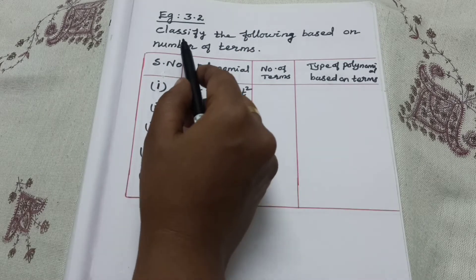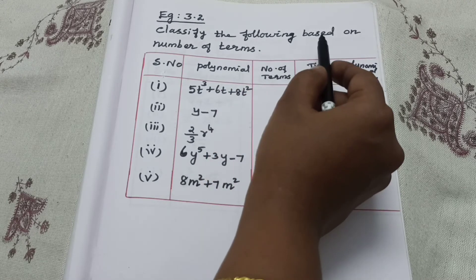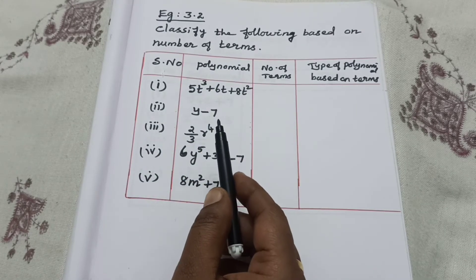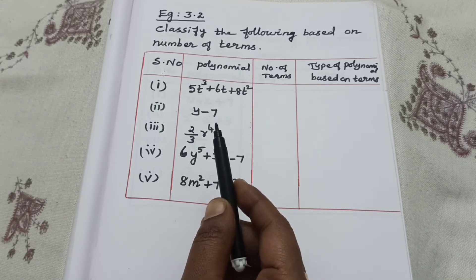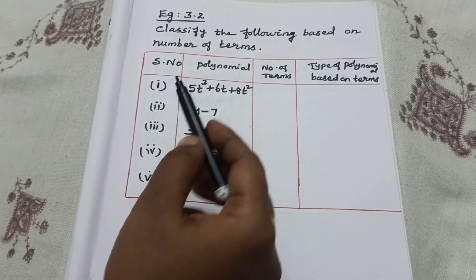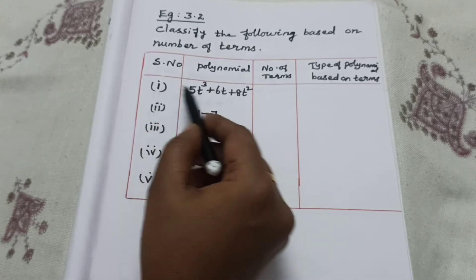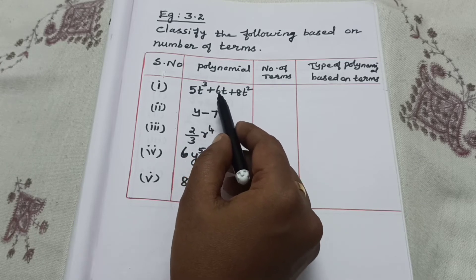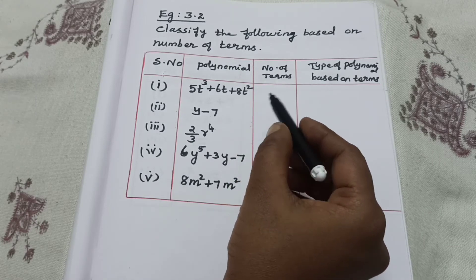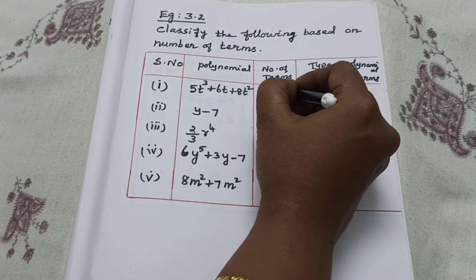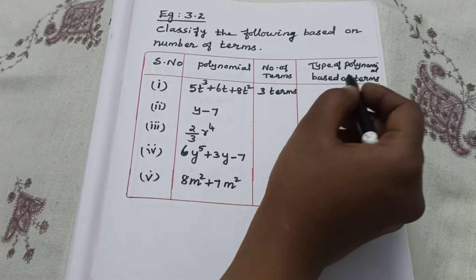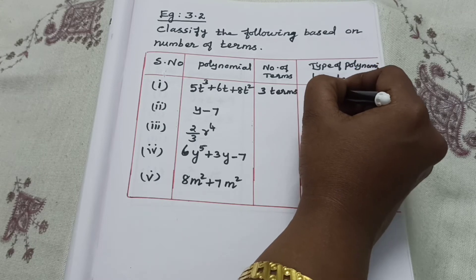Example 3.2: classify the following polynomials based on the number of terms. First polynomial: 5T cubed plus 6T plus 8T squared — this has 3 terms, so it is a trinomial. Second: Y minus 7 — this has 2 terms, so it is a binomial.